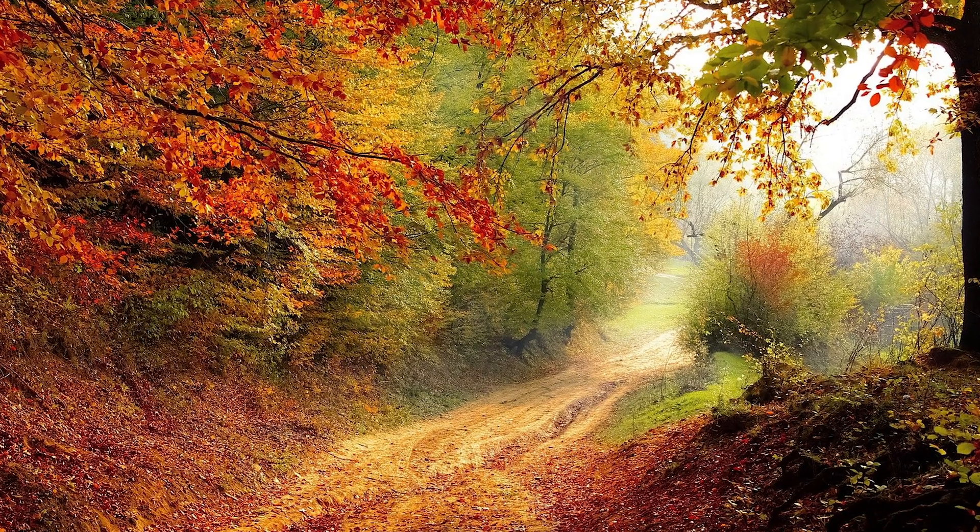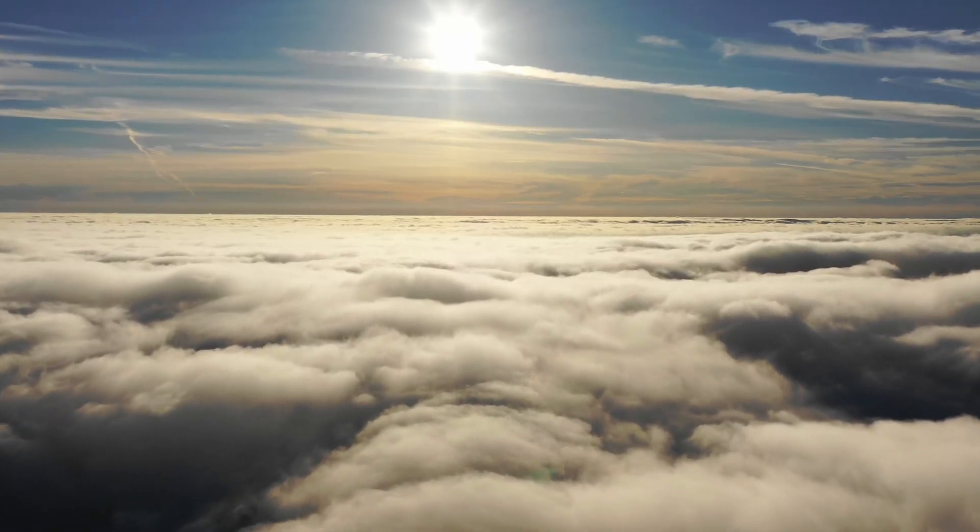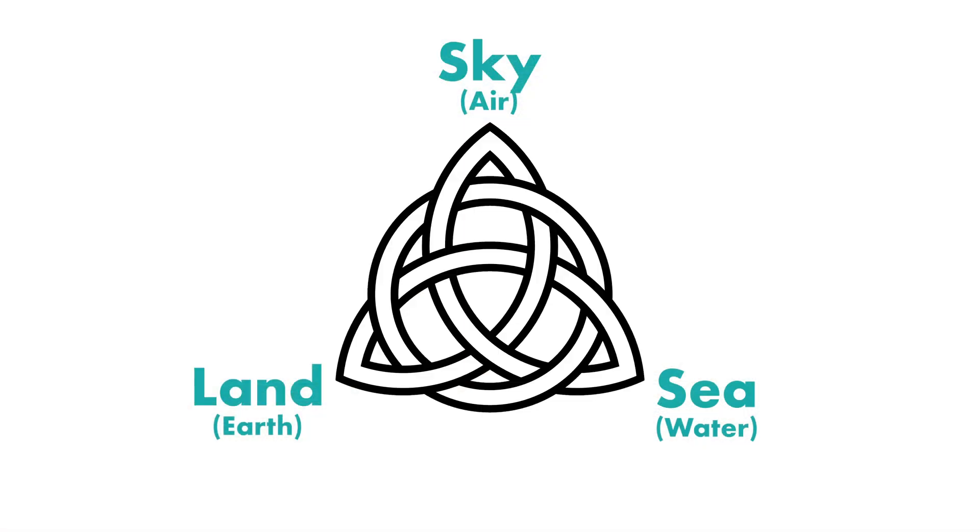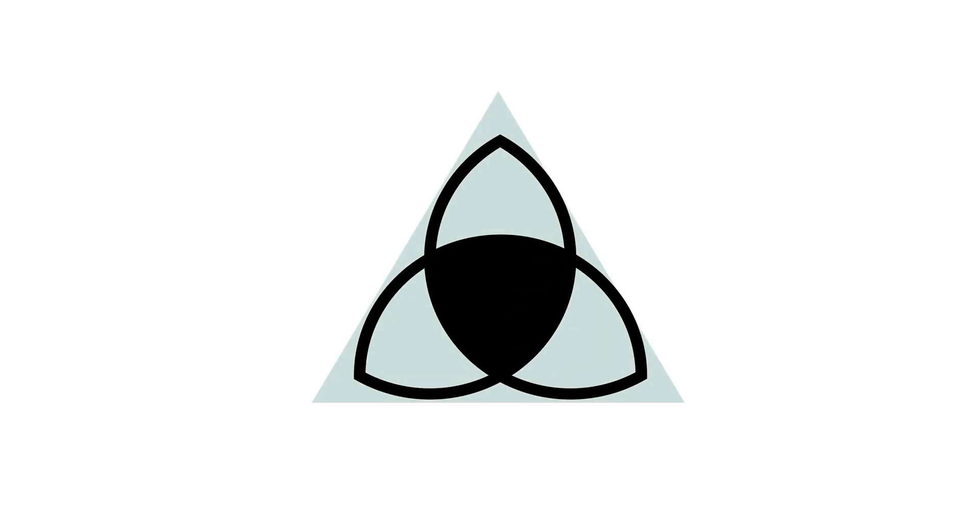In the Celtic tradition, the triquetra used to represent the land, the sea, and the sky. It is considered to be one of the oldest symbols out there, dating back to as early as 500 BC. In Celtic tradition, they believe that everything in this world came in threes.